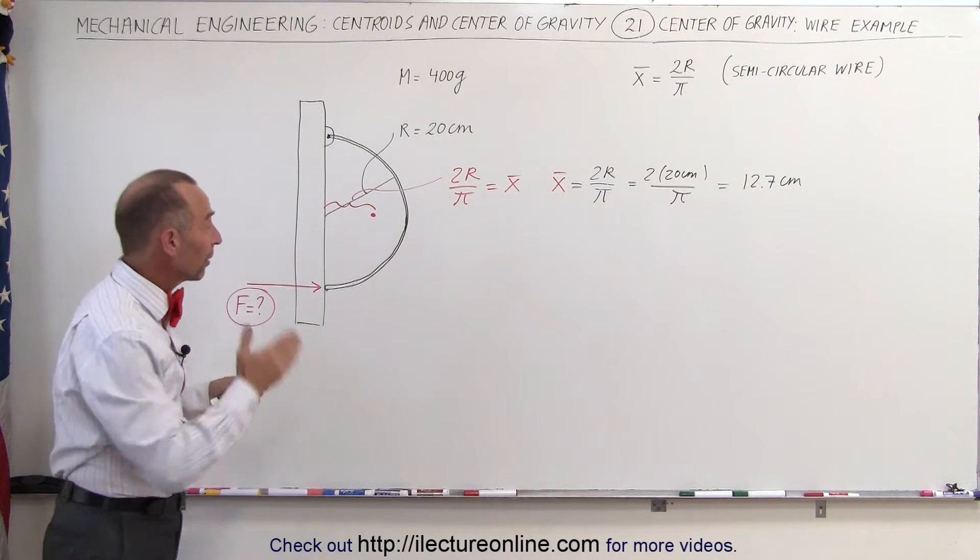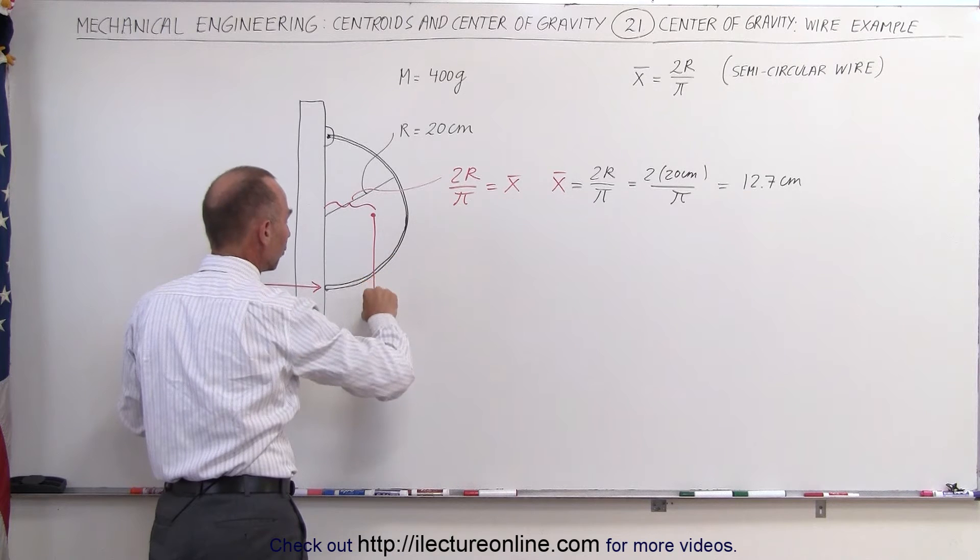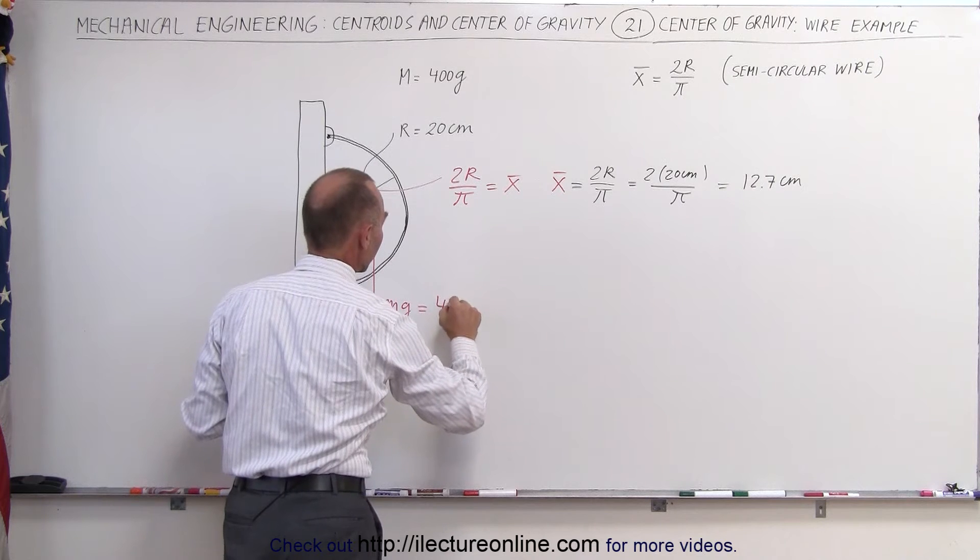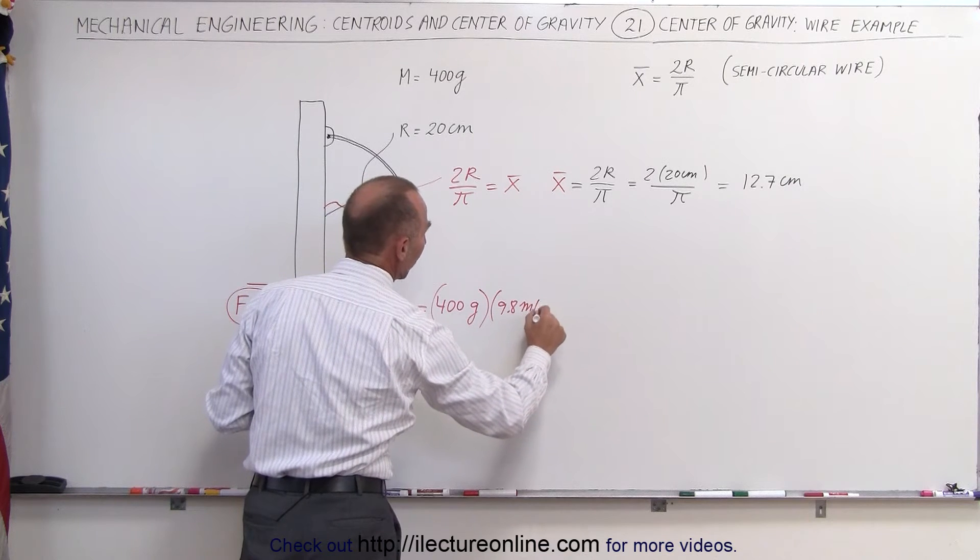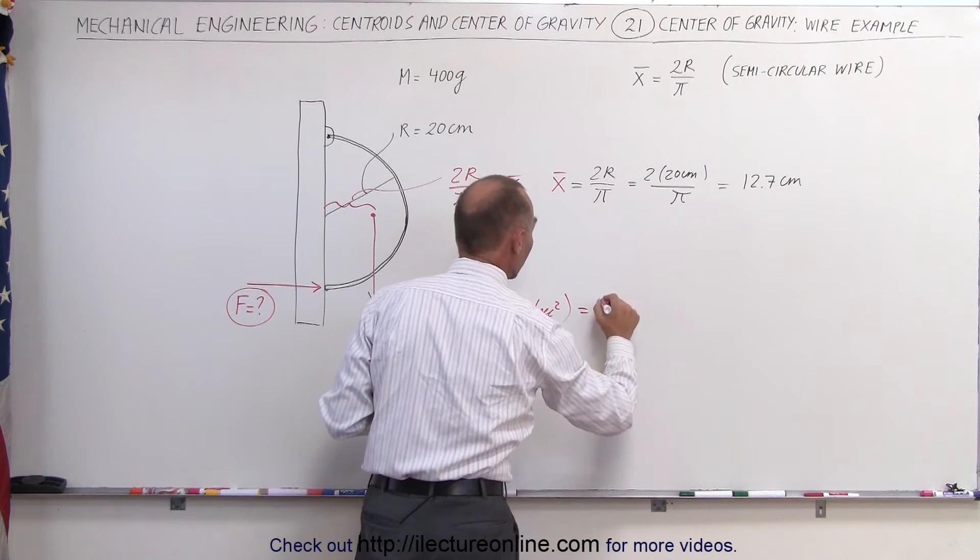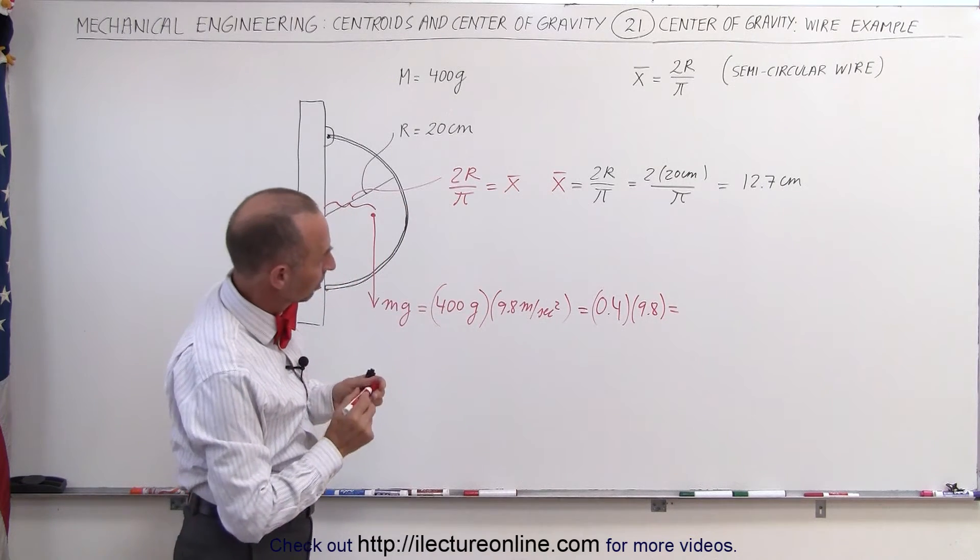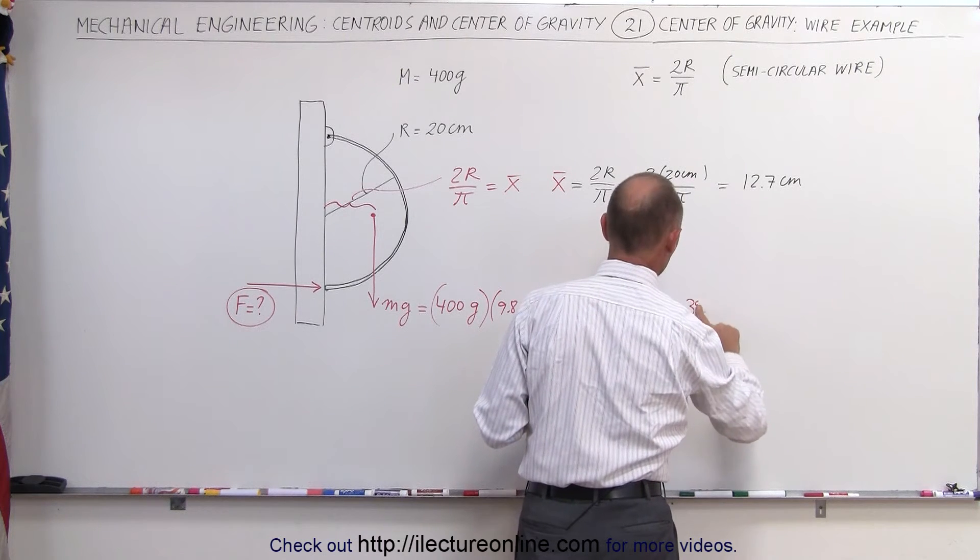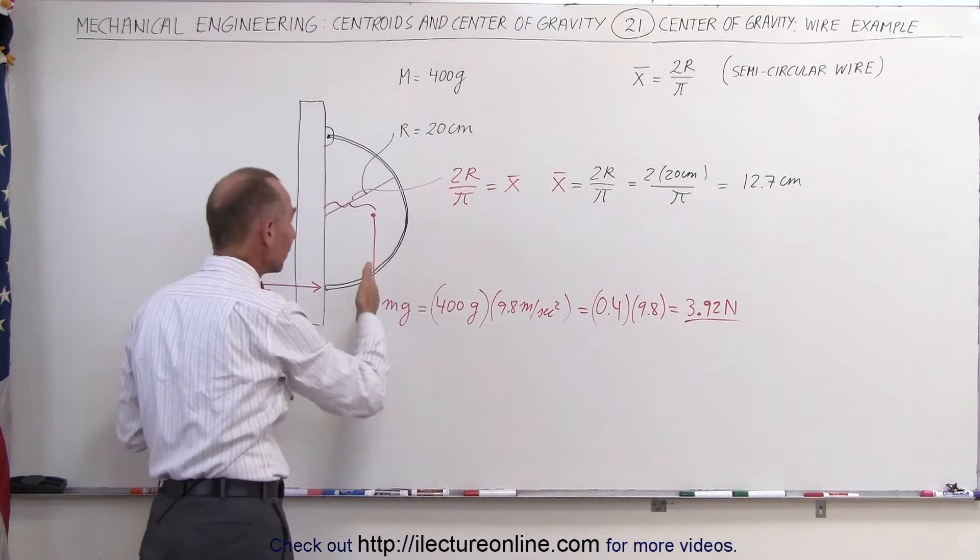Now we know that gravity acts upon the wire as if all the mass is right here at this point, which means that the force due to gravity pulls right down there. That would be m times g. In this case, m is 400 grams times 9.8 m/s² for the acceleration due to gravity. Notice that we should convert this to kilograms. This is therefore 0.4 × 9.8, which equals 3.92 newtons. That is the force of gravity pulling down on the wire.